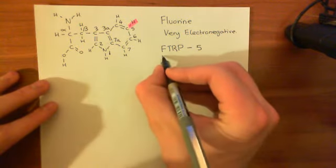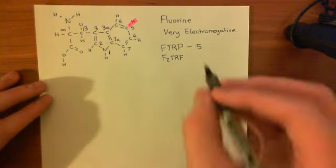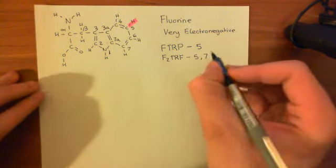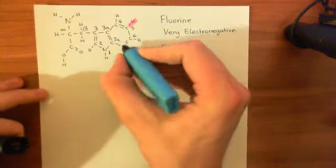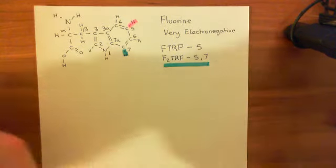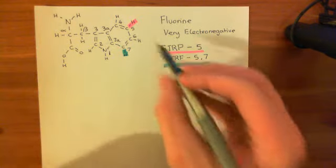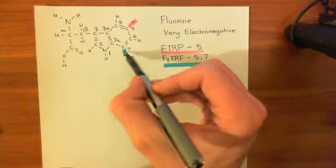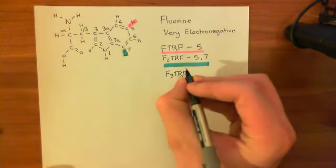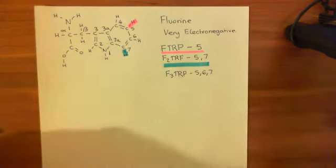Then we have what's known as F2-TRP, which has two fluorine atoms: one remains at position 5 and we also put one at position 7. Then F3-TRP has fluorines at positions 5, 6, and 7 — another step up. We take off the hydrogen at position 6 and add a fluorine there.